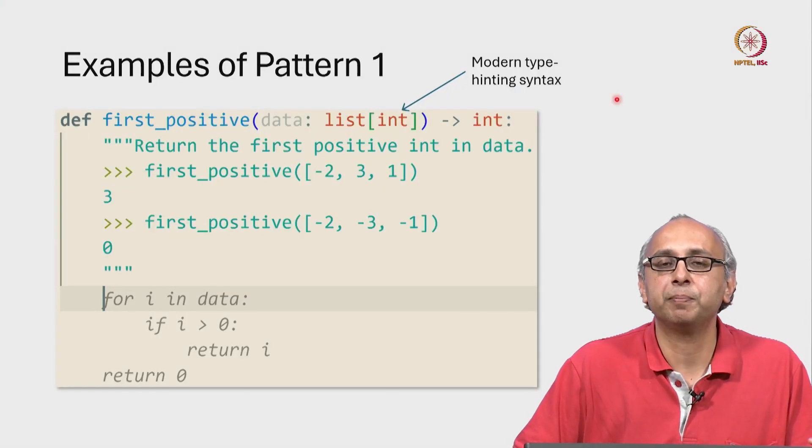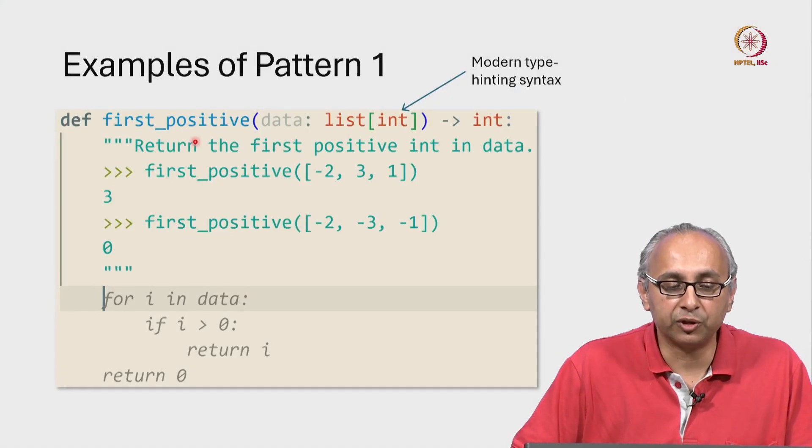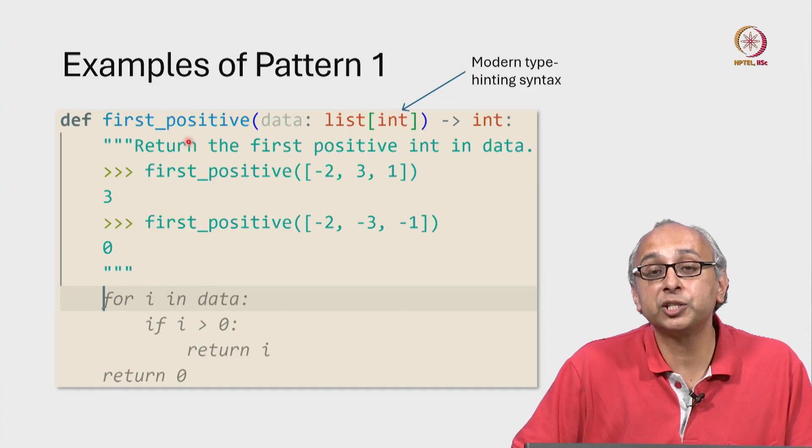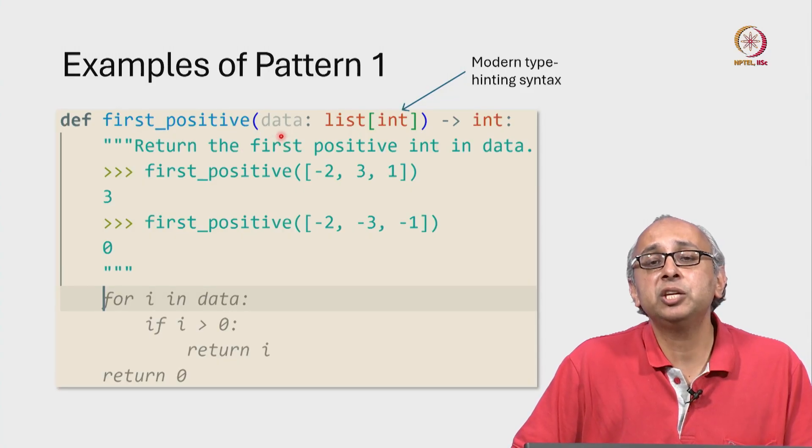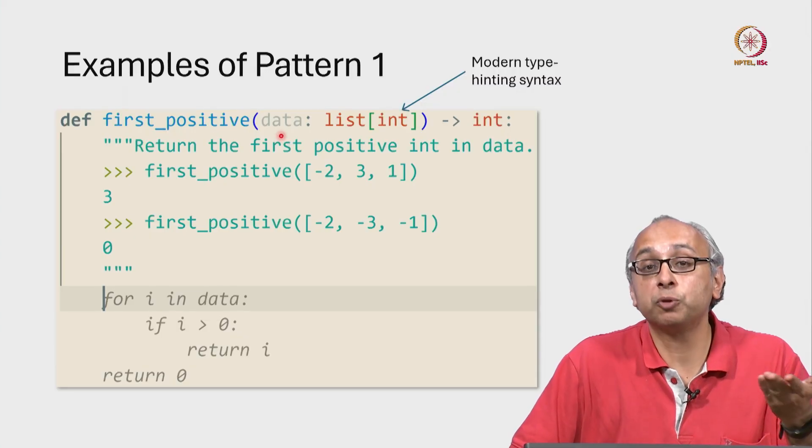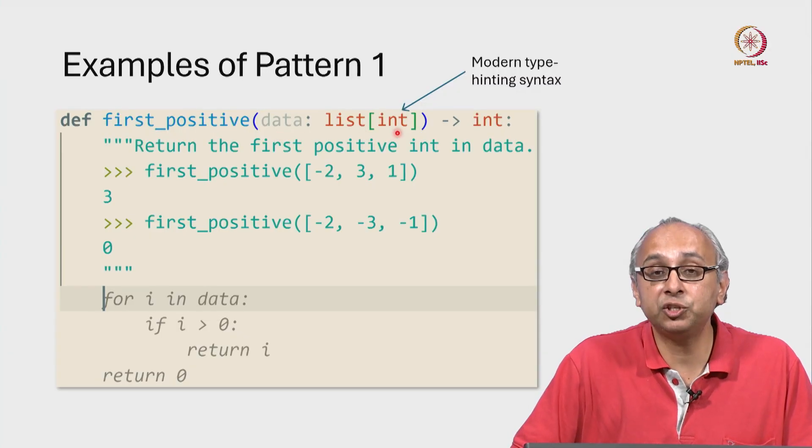Here's another example of pattern one. In this function which is looking for the first positive integer, I'm specifying that data is not just simply a list which could be heterogeneous but it's a list of integers.